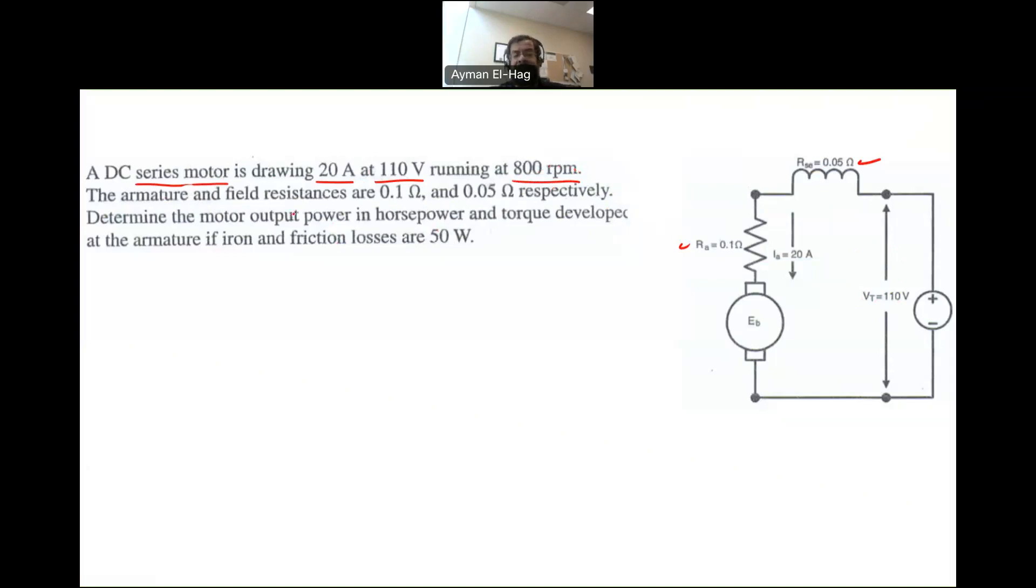We are given the armature and the field resistance as 0.1 and 0.05. We want to find the motor output power in horsepower, and then B, we want to find the torque developed, the developed torque.